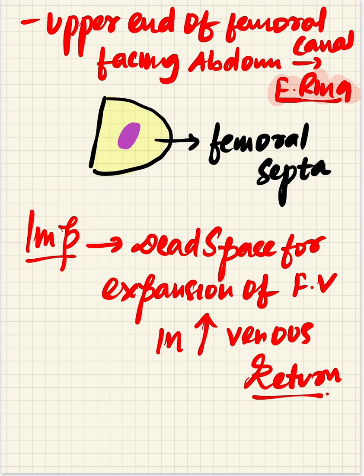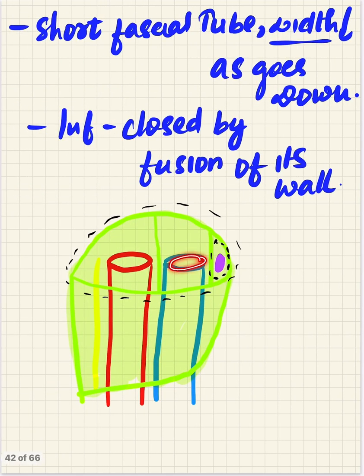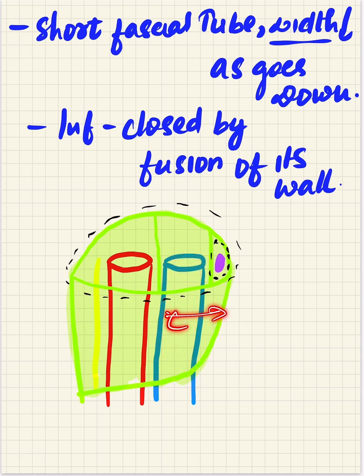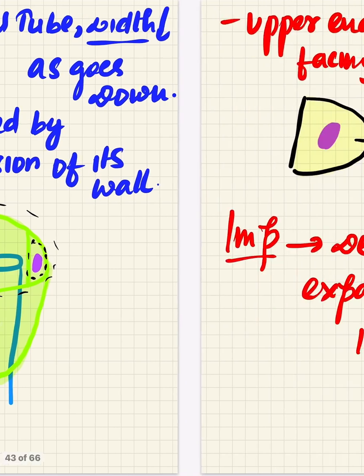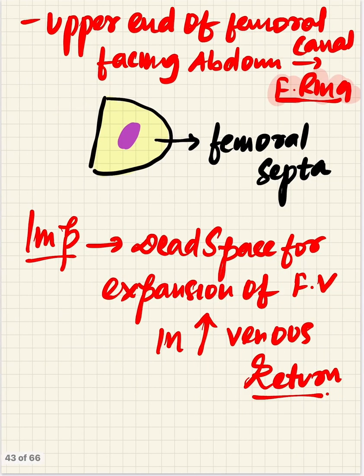The importance of the femoral canal is that it provides dead space for enlargement of the femoral vein during increased venous return. When venous return increases, the femoral vein enlarges and the femoral canal accommodates this enlargement. It also accommodates the lymph node of Cloquet.